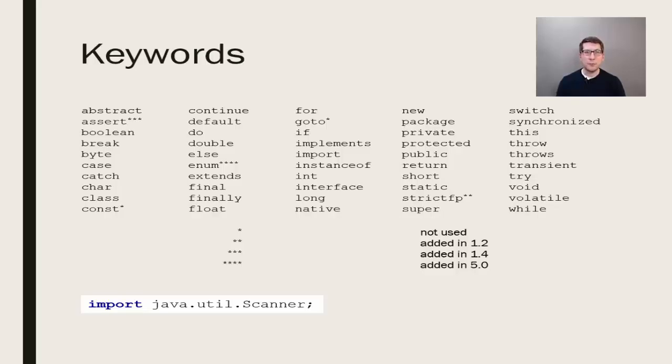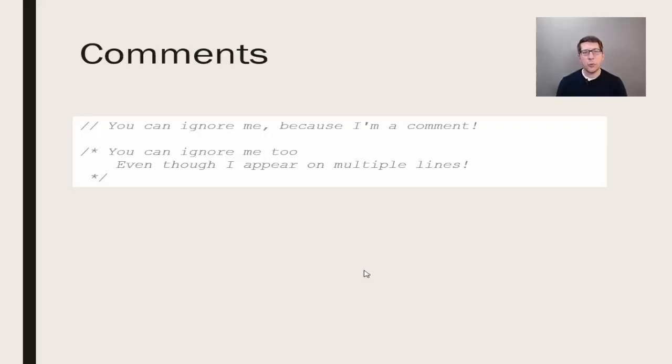You can leave notes in your code that will be ignored by the compiler. We call these comments or reminders, also known as rems. A single line comment uses two forward slashes. A multi-line comment starts with slash star and ends with star slash.